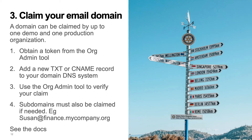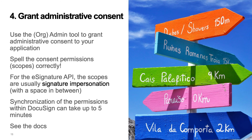See the documentation for details on how to claim your email domain. Step four is to grant administrative consent by using your organization admin tool. Be sure to spell the consent permissions correctly — they are not spell-checked. For the eSignature API, you will need the signature and impersonation scopes. Depending on your application and the APIs it uses, you may need additional scopes too. Note that synchronization of the permissions within DocuSign can take up to five minutes, so if your application doesn't work immediately, try it again a couple minutes later.